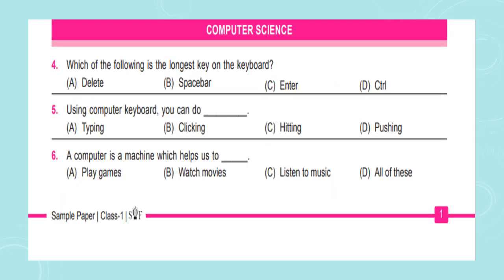The next section is Computer Science. Question number 4: Which of the following is the longest key on the keyboard? Option A: Delete, Option B: Spacebar, Option C: Enter, Option D: Control. Question number 5: Using a computer keyboard, you can do ___. Option A: Typing, Option B: Clicking, Option C: Hitting, Option D: Pushing.